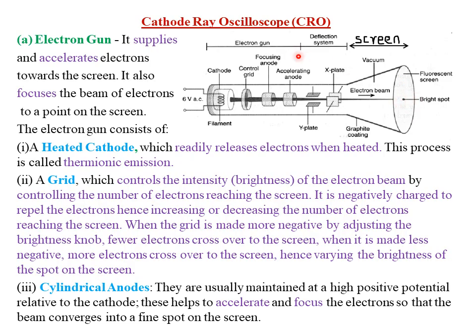Let's look at the components of the CRO, that is the cathode ray oscilloscope. The first component is what we call the electron gun. The electron gun consists of the cathode, the control grid, the focusing anode, and the accelerating anode. The second component is what we call the deflection system, which consists of both the y and the x plates. The third component is what we call the screen, which consists of the fluorescent screen.